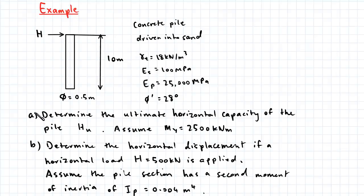Part A of this example wants us to determine the ultimate horizontal capacity of the pile HU assuming a yield moment of 2500 kNm.